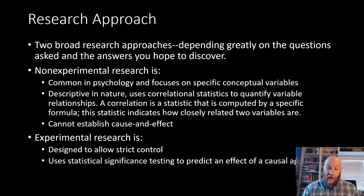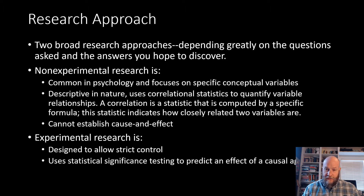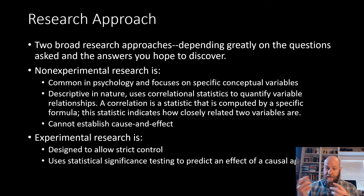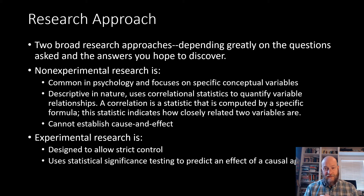Related research they also did in 2008 is a much better example of experimental research — the pro-social spending hypothesis study. Participants were randomly assigned to one of four conditions based on two independent variables. The first was spending $5 or spending $20, so two levels of that independent variable. The second variable was whether you spend that money on yourself or on someone else.